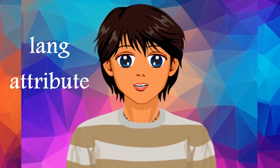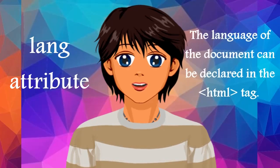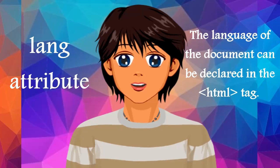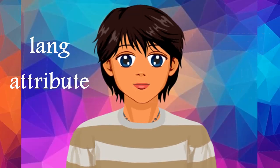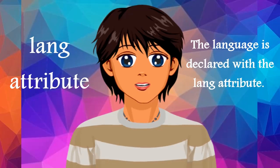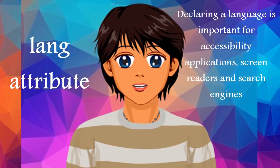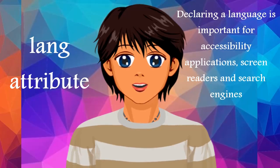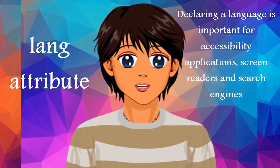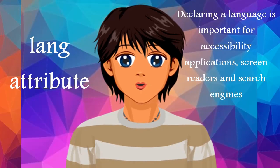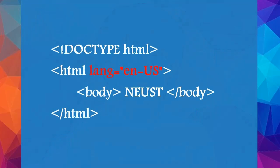The lang attribute. The language of the document can be declared in the HTML tag. The language is declared with the lang attribute. Declaring a language is important for accessibility applications, screen readers, and search engines. See the following example. The first two letters specify the language. If there is a dialect, use two more letters.